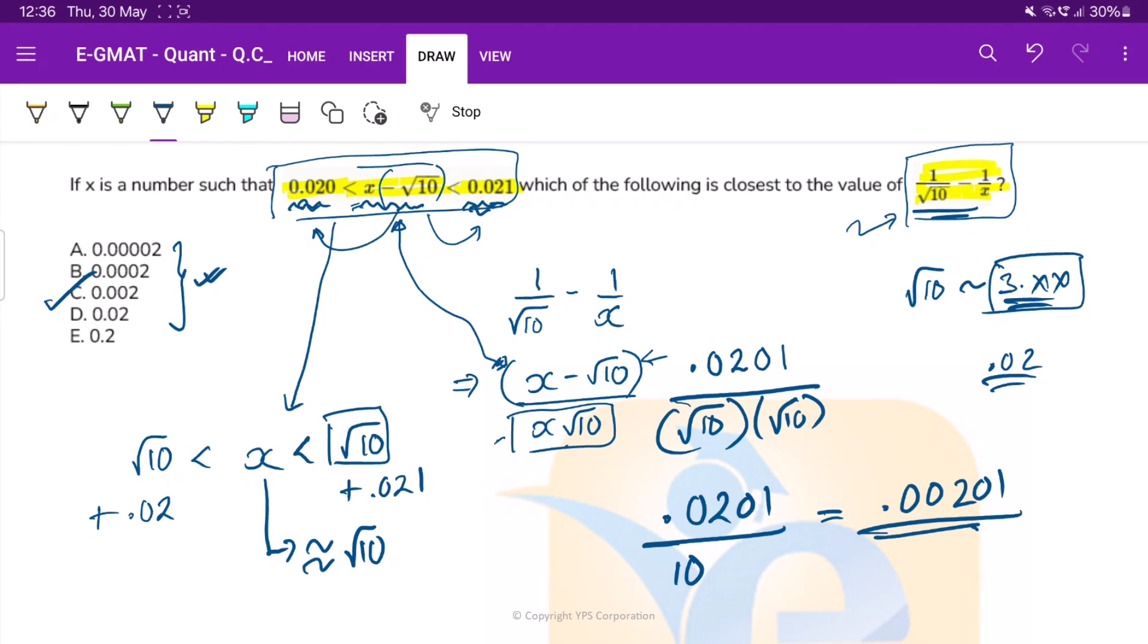So first we took this expression, we simplified it. What we saw that we have a part of this expression from here. We saw that the numbers are very close, so we can take some approximations. We took a case here, we took approximations here. So that way, step by step, you can solve almost each and every quant question. Thanks.